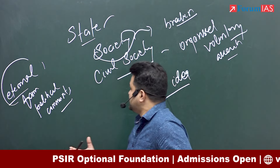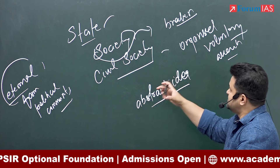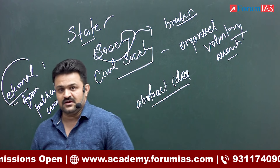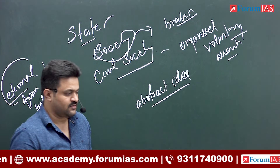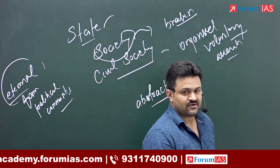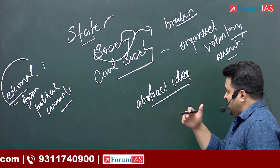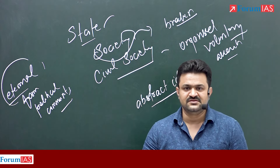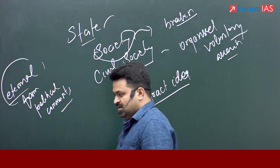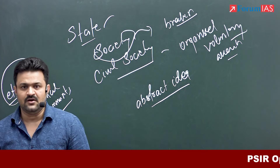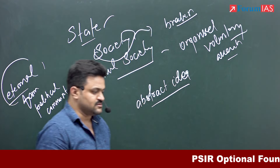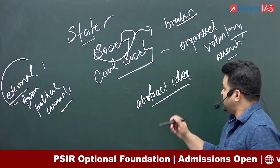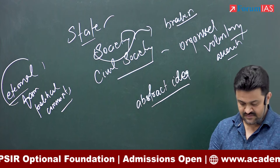These are the basic points with respect to state, society, and civil society. To understand them in a scholarly manner, further elaboration is needed, but that is not the purpose of this series. In the next part, we are going to understand authority, power, and legitimacy — what are the connections between these terms and how they relate to the concept of state. Thank you.